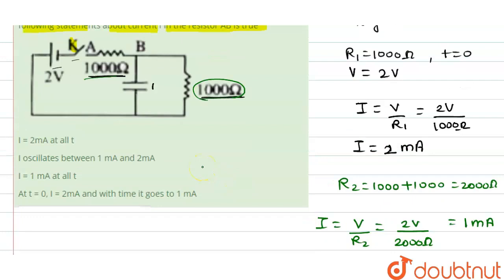So we can say the current for the circuit initially at time t equals 0 is 2 milliampere, and after that the current will be 1 milliampere with the increasing time. So if we check here, the correct option is option D. Thank you.